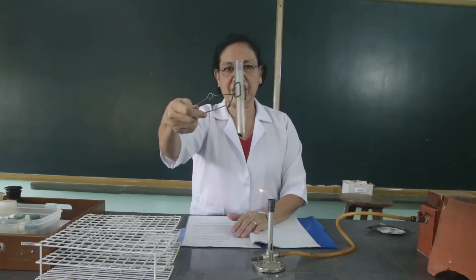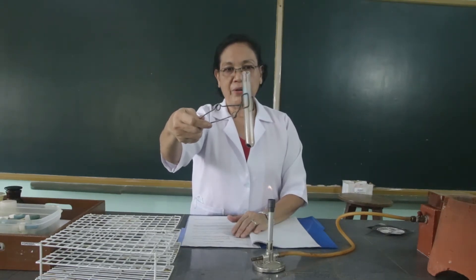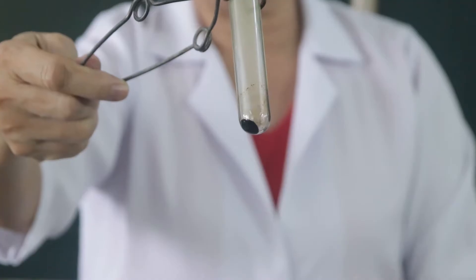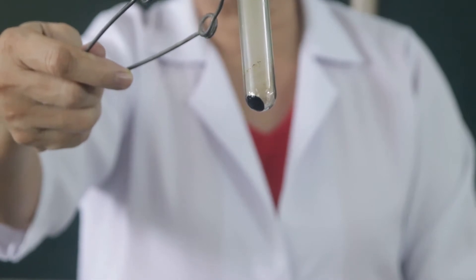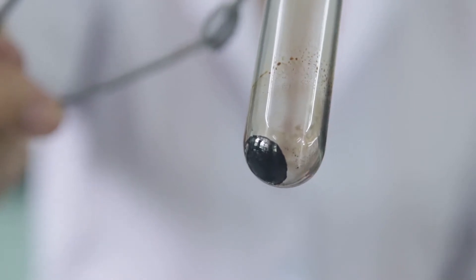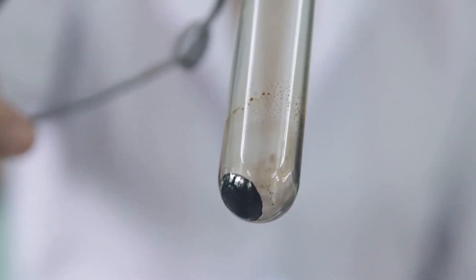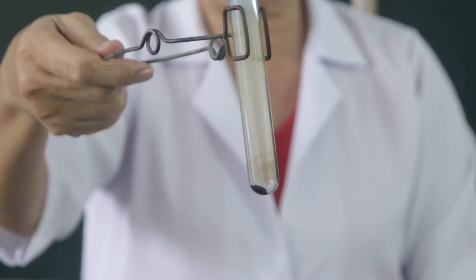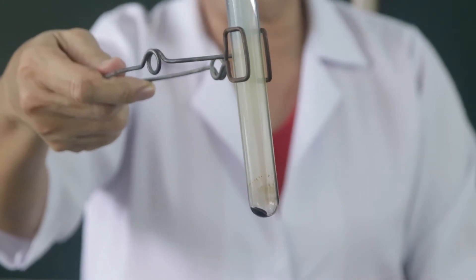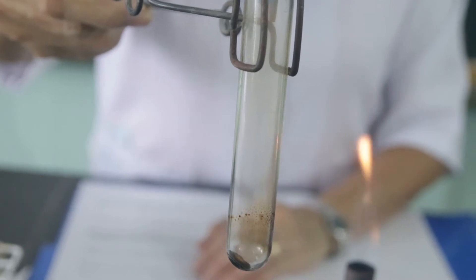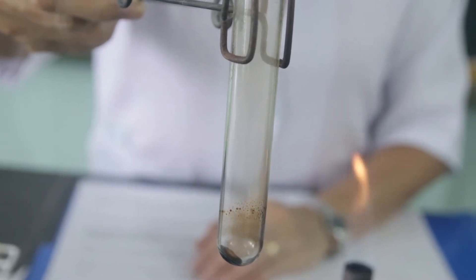I want you to look at what happens to the casein at the bottom of the test tube, and then what happens to the color. A while ago, the color of the casein was lighter yellow. And this time, after heating, what is the color of the casein? Notice also the gas that is emitted or issued out by the casein. Look at the test tube containing the gas. What gas is this?